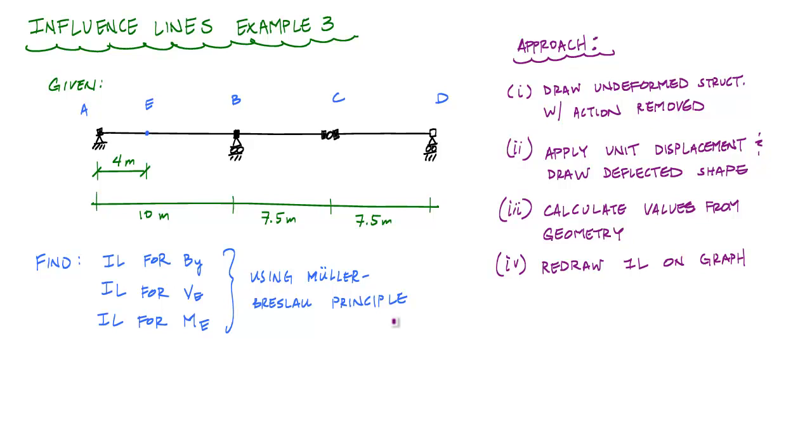The approach that we're going to do is as follows. Draw the undeformed structure with the action removed, apply that unit displacement or rotation, and then draw the deflected shape. I like to calculate values using geometry of the structure. You could always calculate a value by applying a unit concentrated force at the location you want that influence line value. Then I like to redraw the influence line on a nice clean plot or graph.